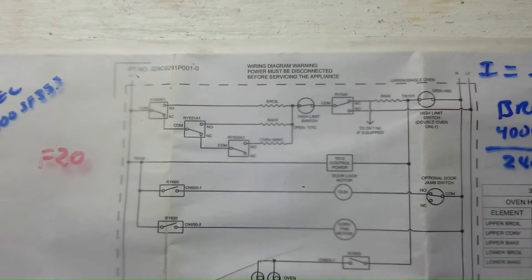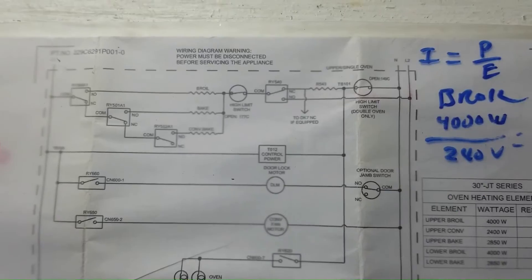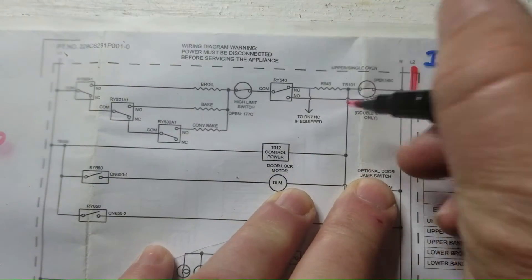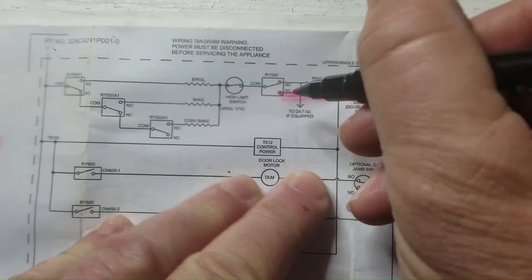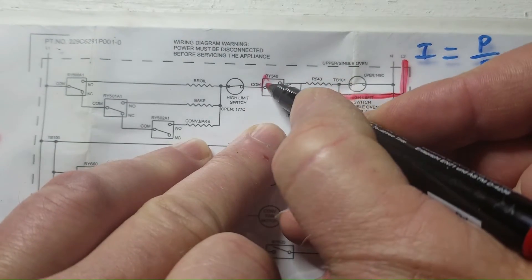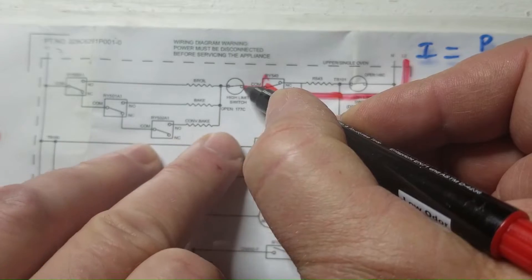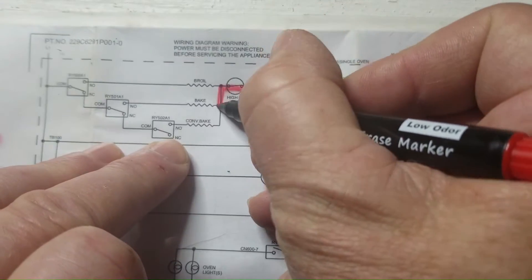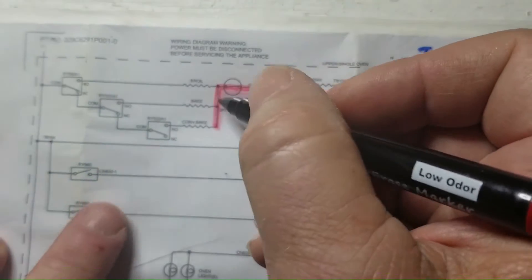So this is your bake and broil circuit right here. The circuit is from L2, it goes through this DLB relay which during any cycle this relay closes and stays closed unless there's a problem. This is your high limit thermostat. So voltage will appear here during any cycle, so your L2 will appear here during any cycle.